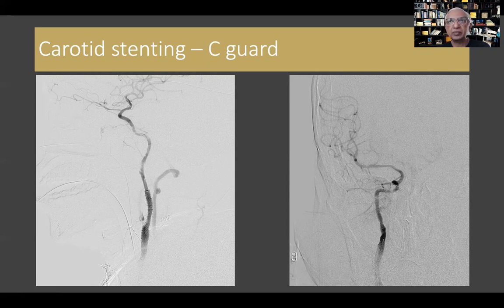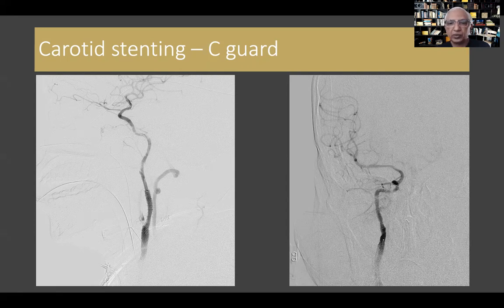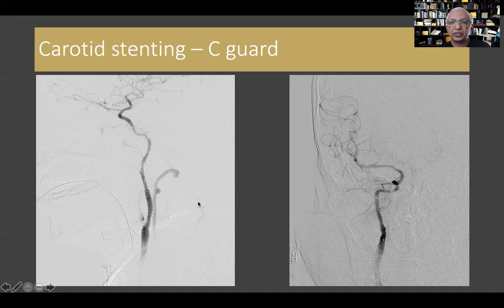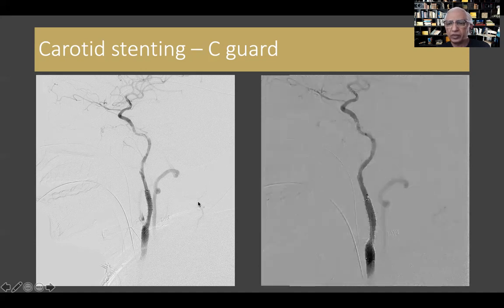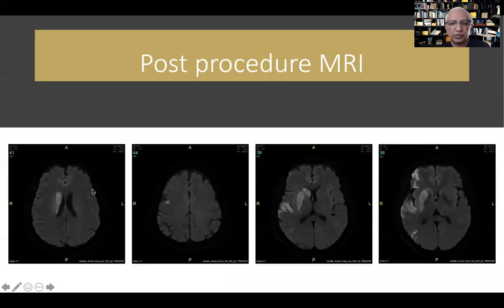The reason we are worried is the risk of bleed — we do susceptibility imaging after to check. That's why it's good to avoid metal at the acute phase, but sometimes you're forced to use it. In this case we use only a single anti-platelet with a very short duration of tirofiban purely because of the worry of bleed, then monitor with carotid Dopplers every few hours to ensure it's patent. It is a difficult decision to take post-procedure.